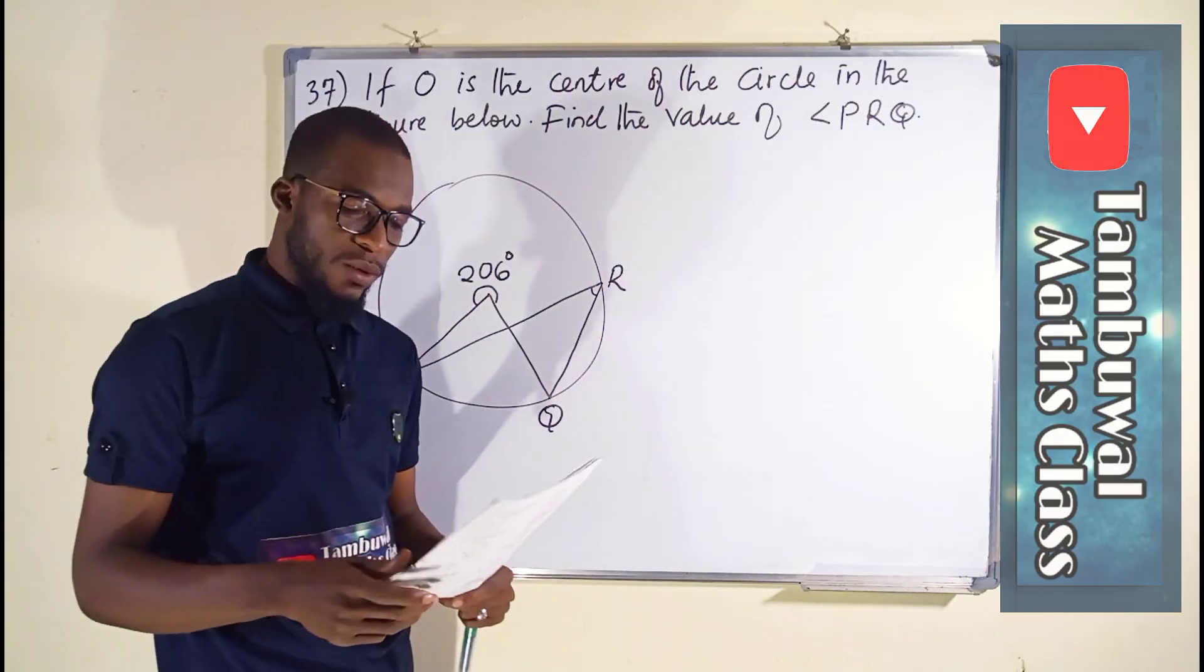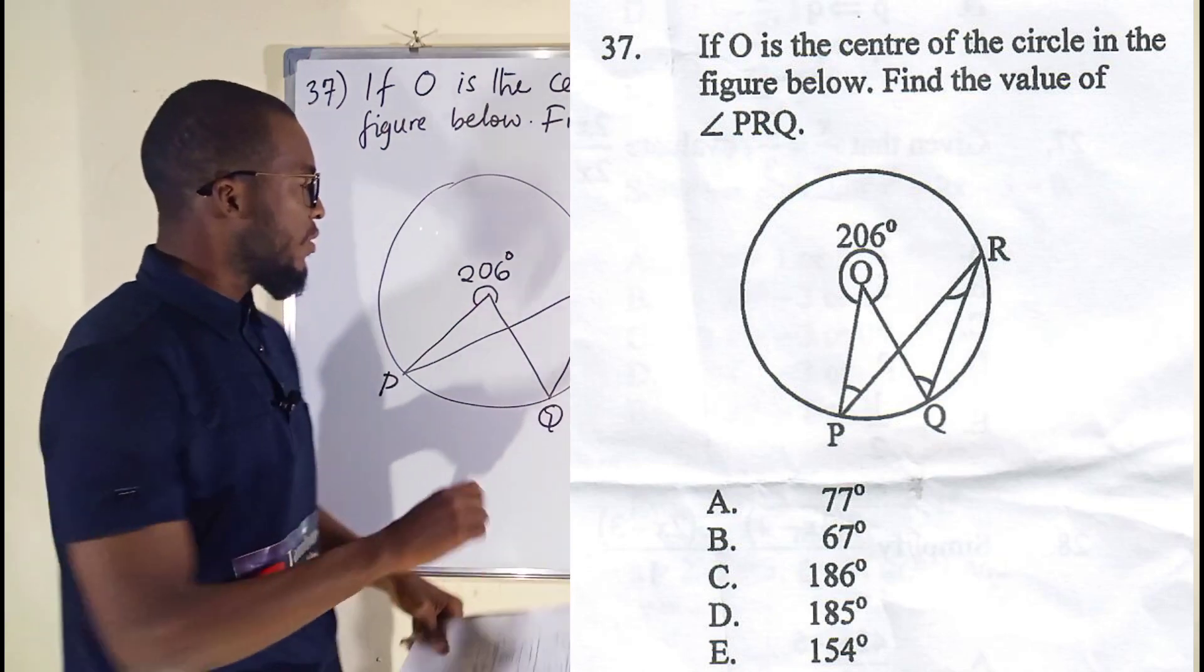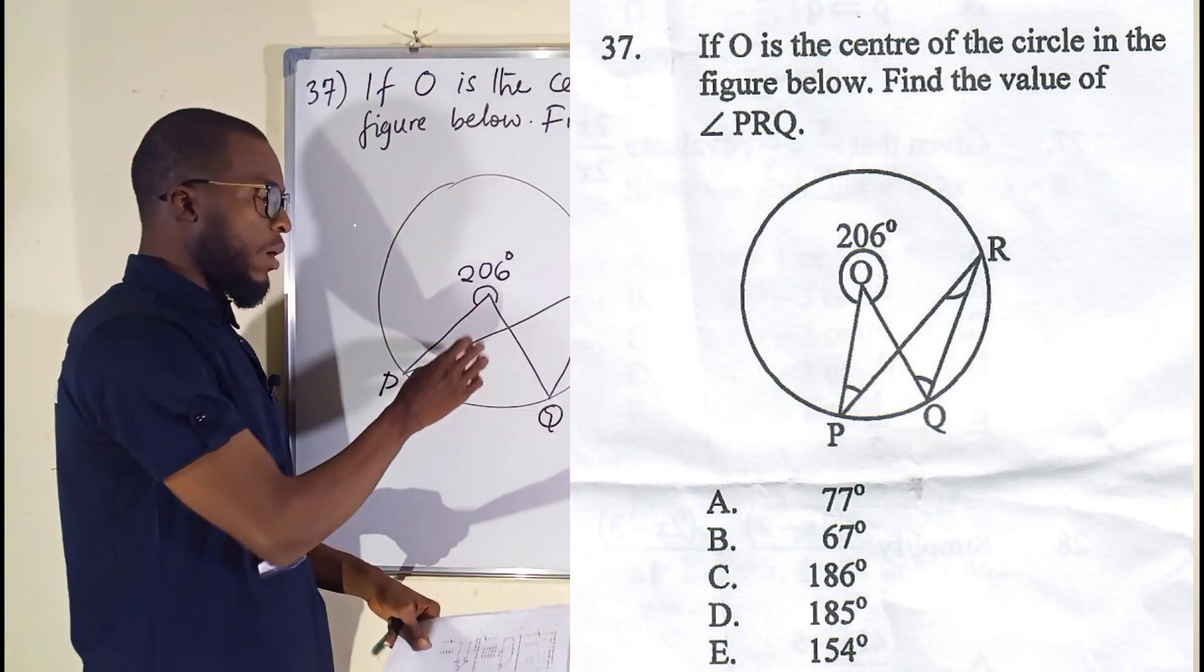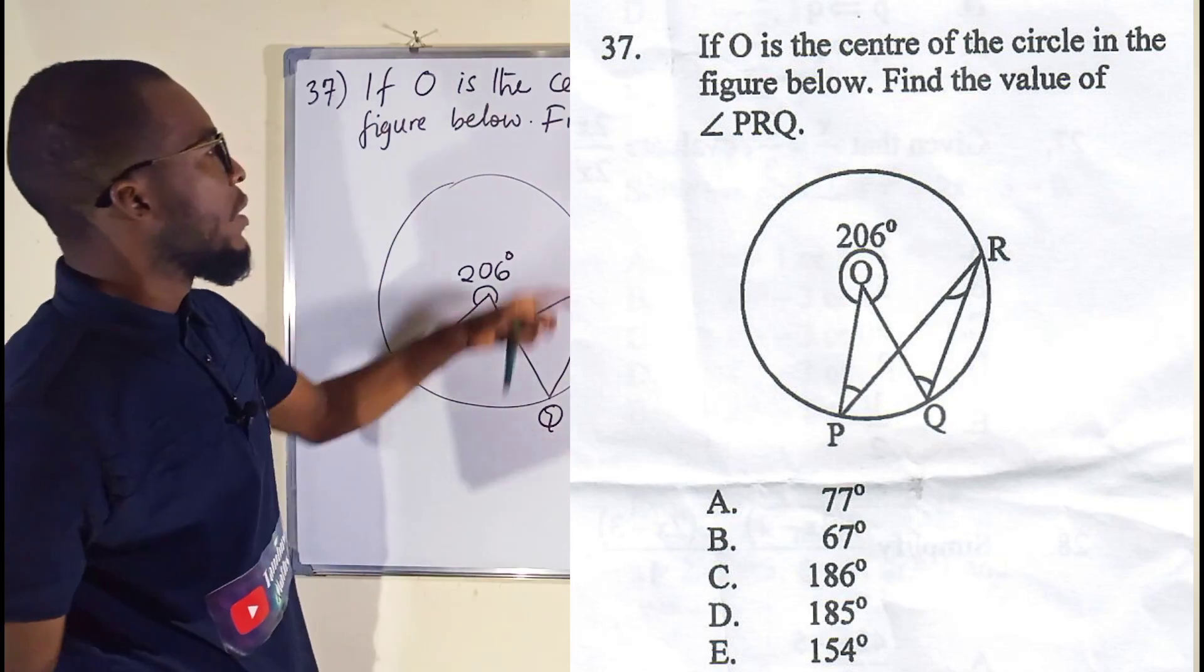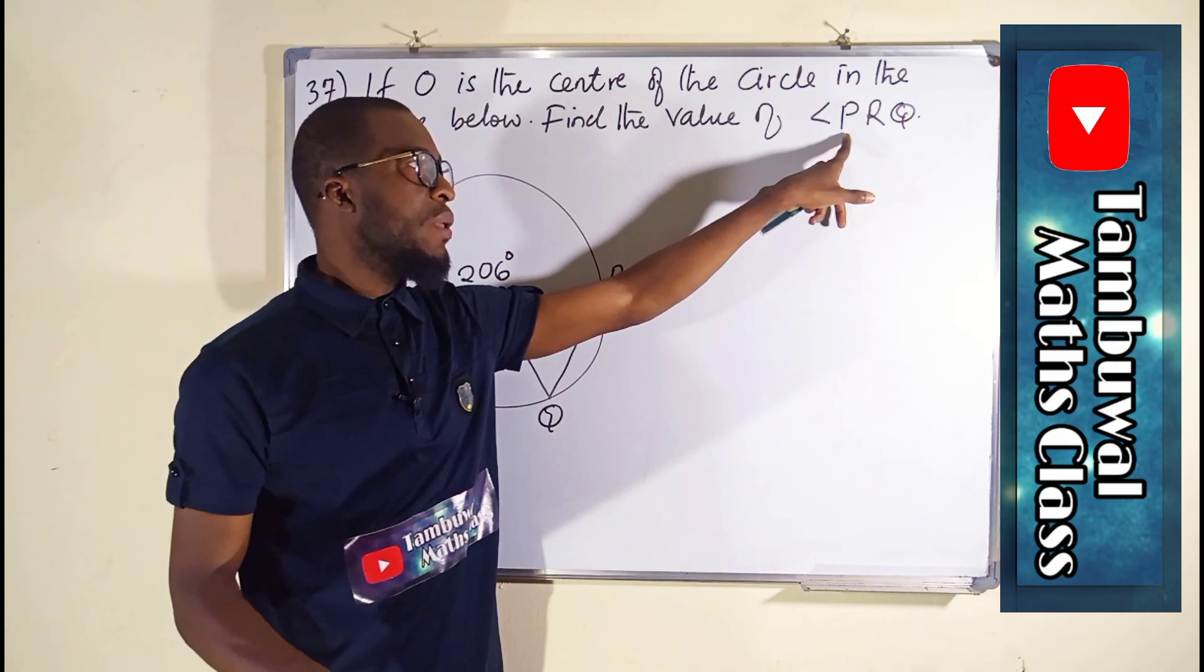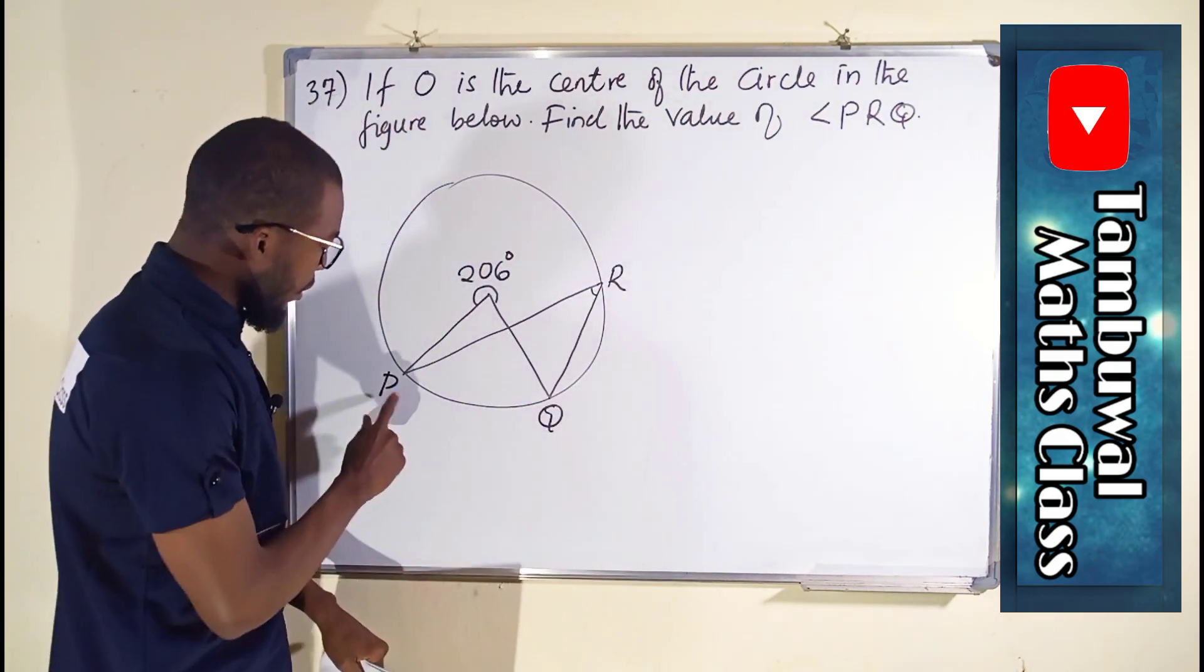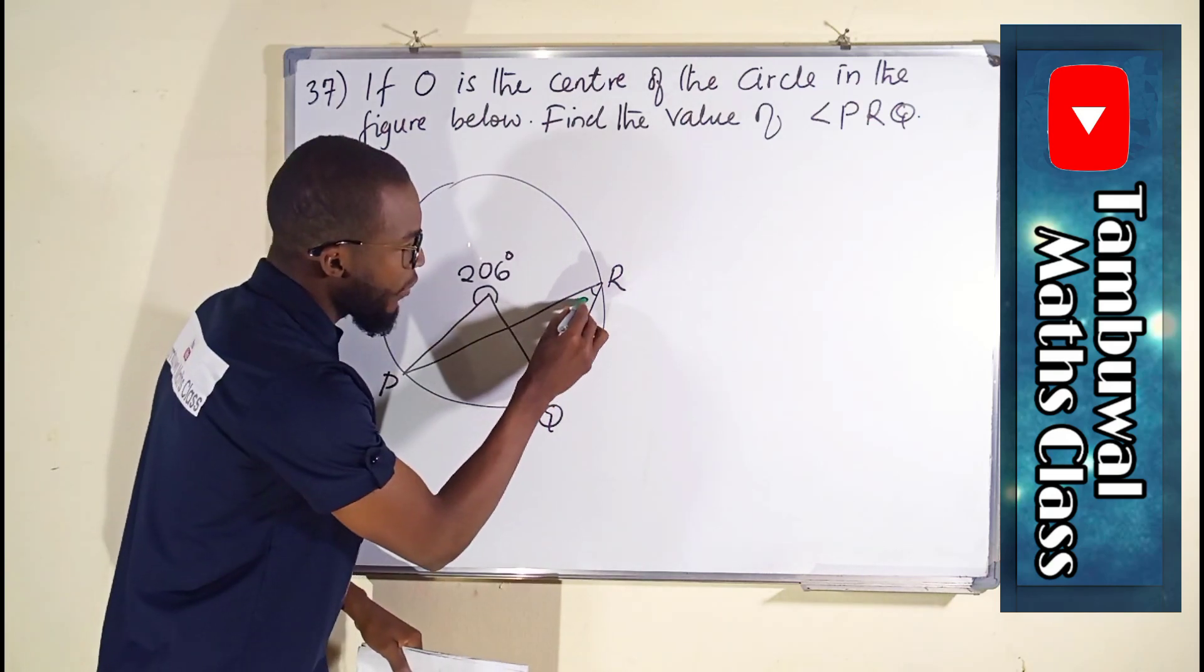Question number 37, it says if O is the center of the circle, you see we have a circle here, and we have some inscribed angles inside. In the figure below, we are asked to find the angle PRQ. PRQ. This is the angle we are looking for.